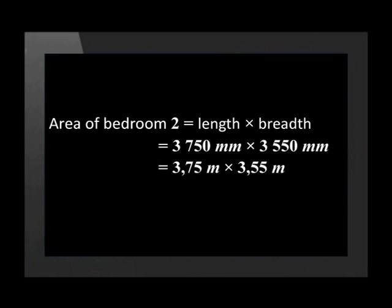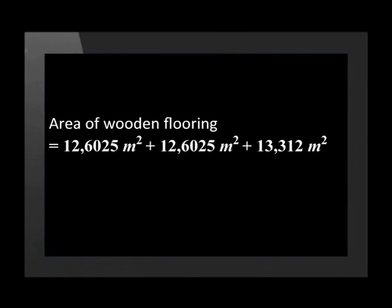Now let's calculate the size of bedroom 2. The area of bedroom 2 is 3,75 metres times 3,55 metres, which equals 13,312 metres squared. Now we need to add the area of all three rooms together: 12,6025 plus 12,6025 plus 13,312 metres squared, giving us 38,517 metres squared. We round this up to 39 metres squared.